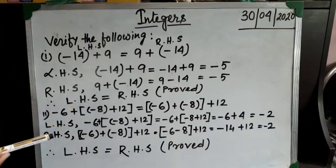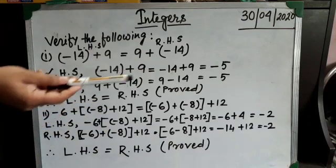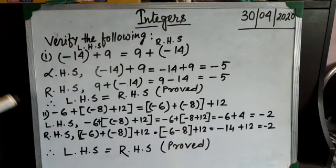Take out the numbers, that is minus 14 plus 12. Both the numbers are having different signs. Subtract them. The ultimate result is minus 2.